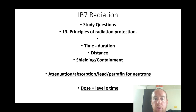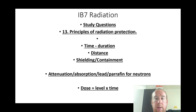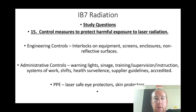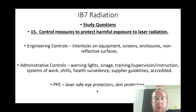Attenuation and absorption: use lead, or paraffin for neutrons — dose equals level multiplied by time. Control measures to protect against harmful exposure to laser radiation: engineering controls such as interlocks, equipment screens, enclosures, and non-reflective surfaces; administrative controls including warning lights, signage, training, supervision, instruction, systems of work, and shifts; health surveillance; supplier guidelines; accredited PPE including laser-safe eye and skin protectors; and compliance with standards.